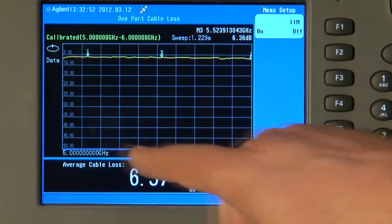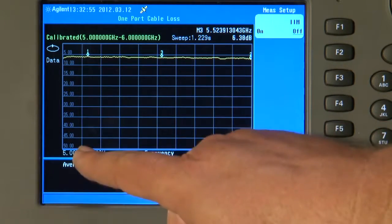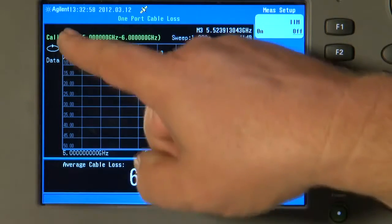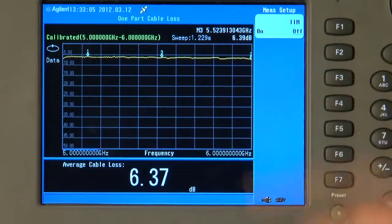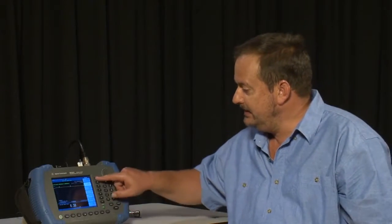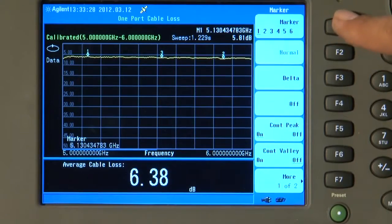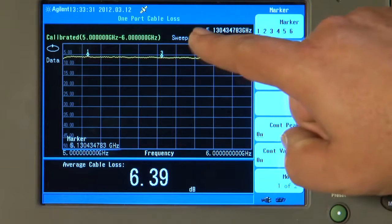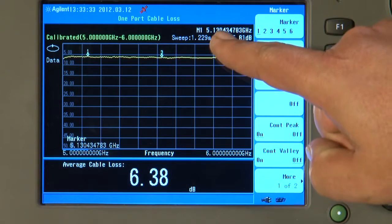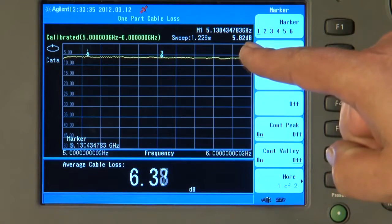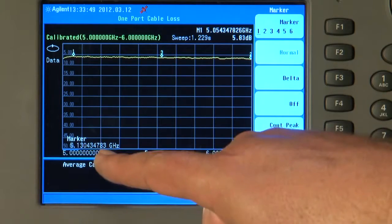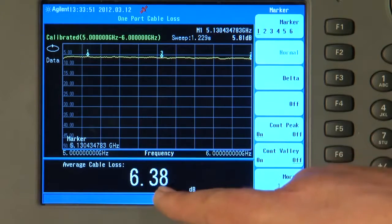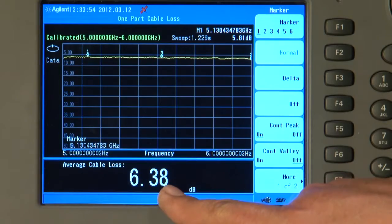So the X axis is again still showing frequency, sweeping between 5 and 6 GHz, but the Y axis is now giving us a measurement of cable attenuation in dB across that frequency range. We can press the Marker button and select any of the six markers. So here Marker 1, you can see at 5.1 GHz the cable has an attenuation of 5.8 dB, and at the bottom of the screen it tells us the average cable loss across the frequency range of 5 to 6 GHz, and currently the average cable loss is about 6.4 dB.